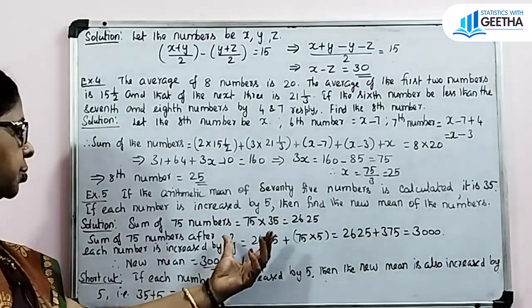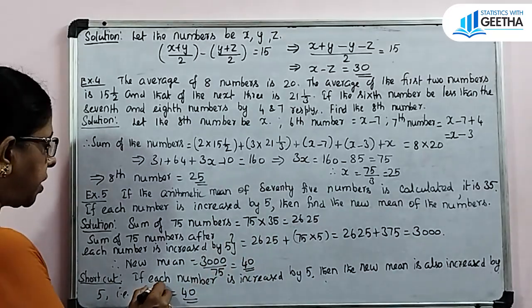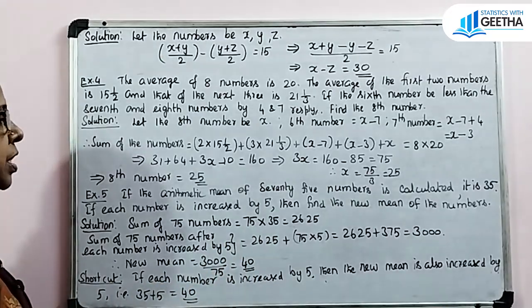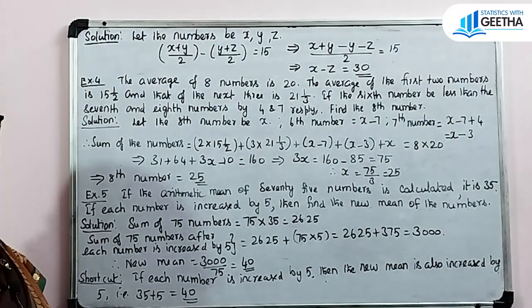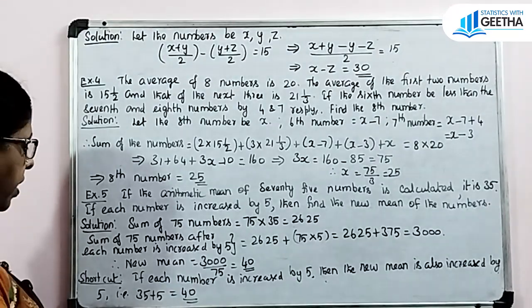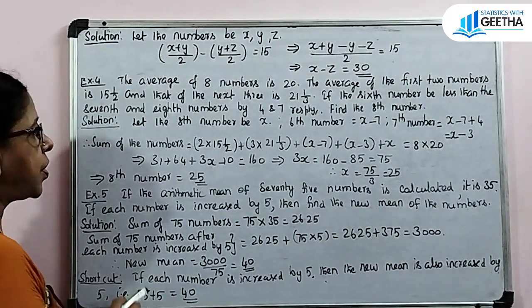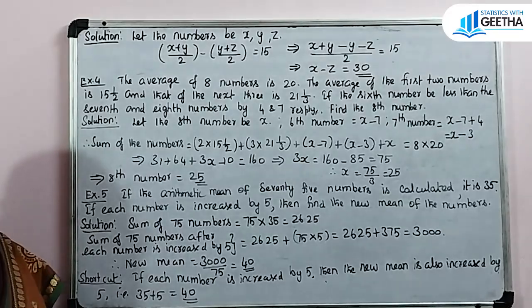This is the short method: if each number is increased by 5, then the arithmetic mean is also increased by 5. So the new mean equals old arithmetic mean plus 5, that is 35 plus 5 equals 40.